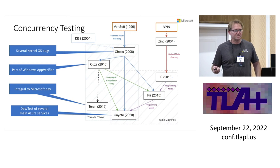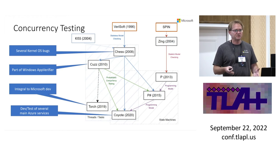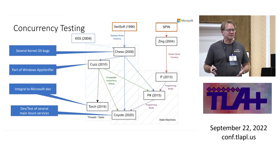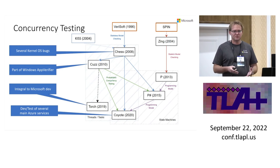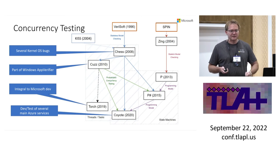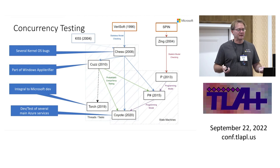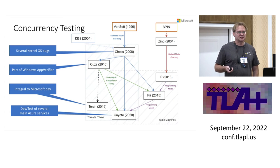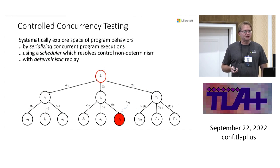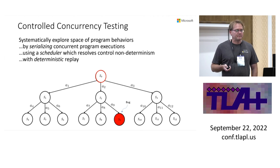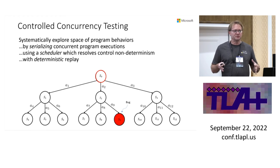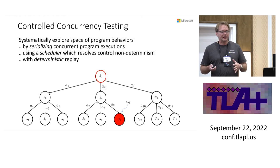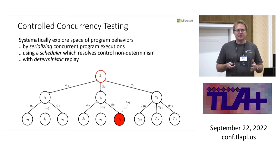KISS is a tool for verification where the main idea is to bound context switching to map the problem into a verification tool. KISS uses the concept of bounding context switches to limit state space exploration. These tools in a nutshell control the scheduler to drive executions into diverse states and cover scenarios that are dissimilar.